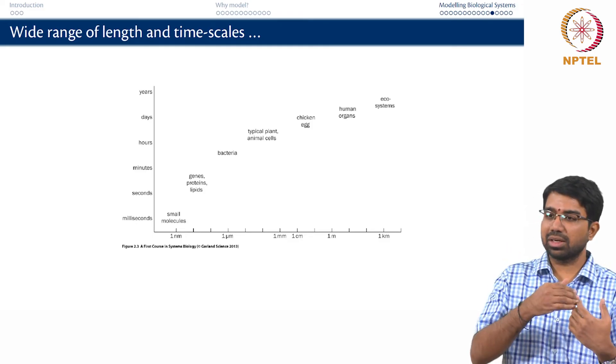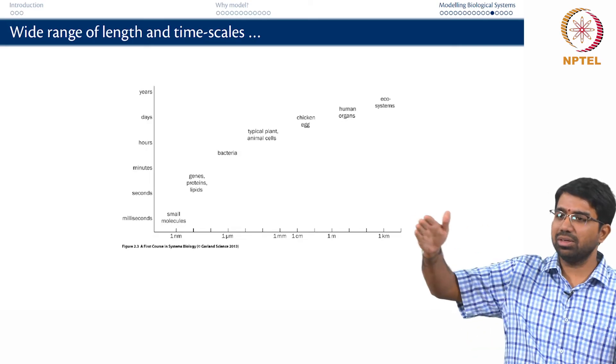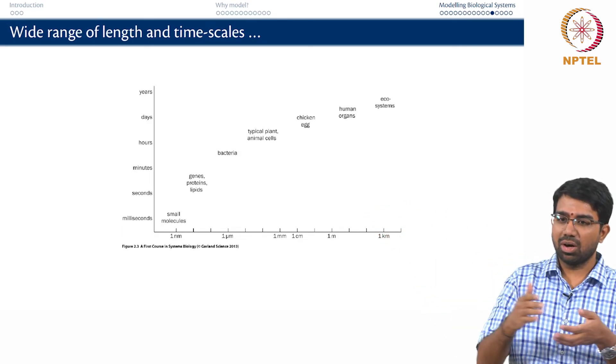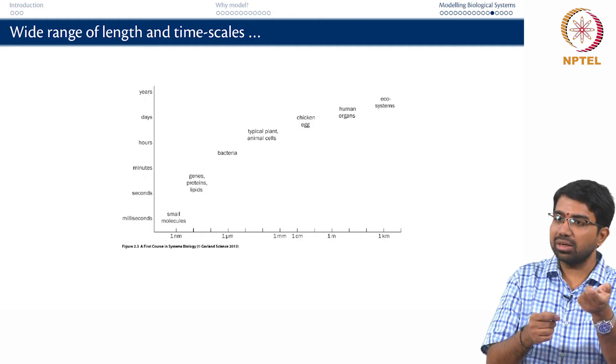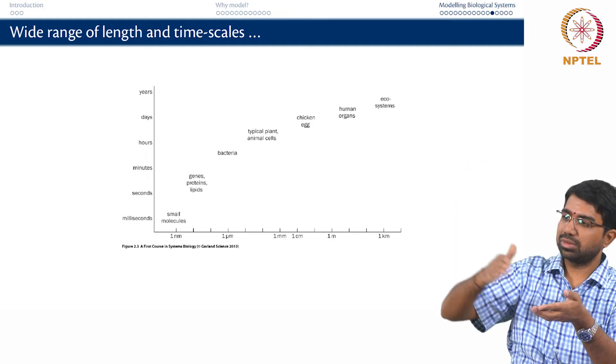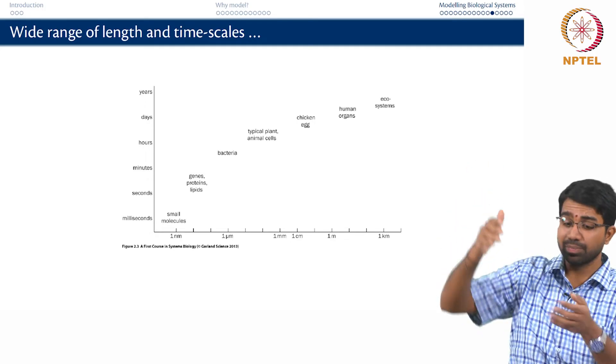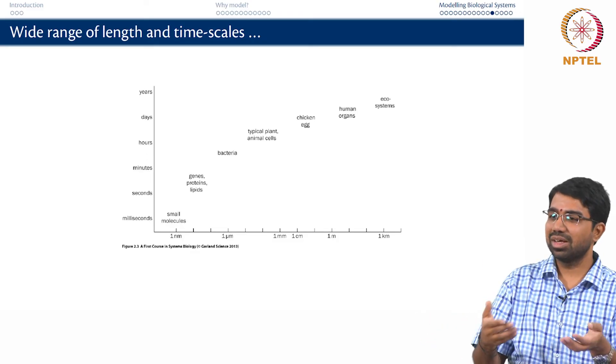And there are growth, development happens over years. Like there are so many things that will take, you know, for example, gestation. It happens over several months. Or there are so many such processes they may be triggered at a particular point but there will be a very slow time scale over which the process evolves. Evolution happens across millions, billions of years.